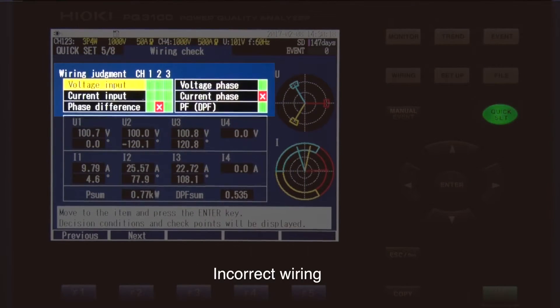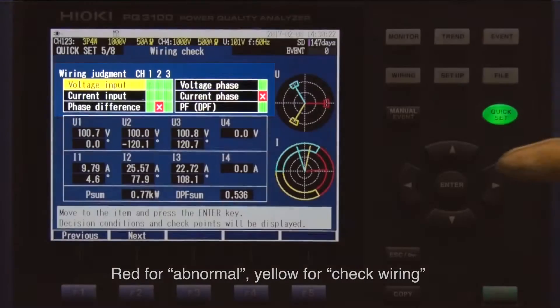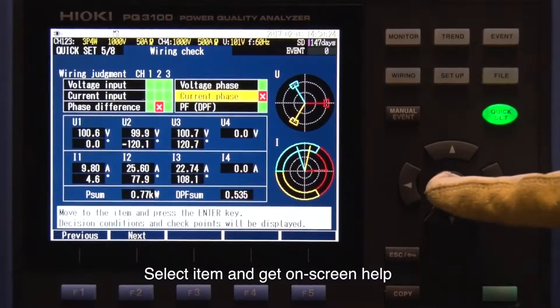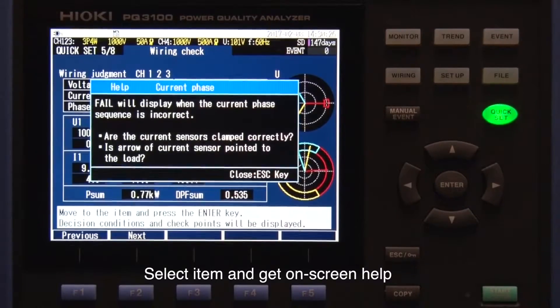Incorrect wiring is indicated in red. Yellow signals that you should double check the wiring. Select the items you want to adjust and get tips on how to fix the problems.